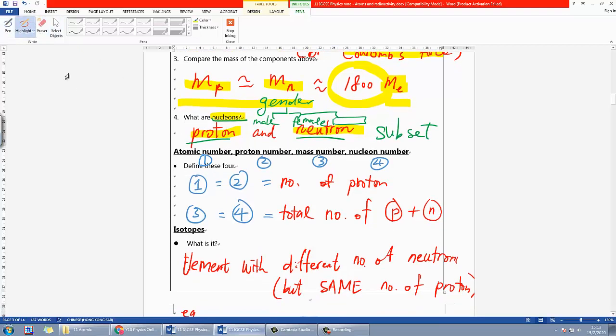The next part defines these four things. Atomic number and proton number are actually the same - the definition is simply the number of protons in an atom. For mass number and nucleons number, they are the same - in terms of the number itself, they're exactly the same. That would be the total sum or total number of protons and neutrons.